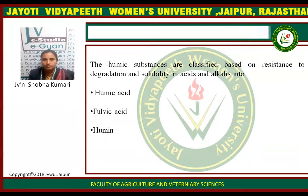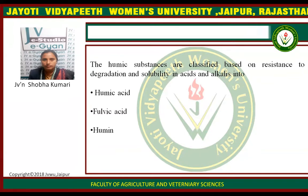Humus is classified based on resistance to degradation and solubility in acid and alkaline conditions into three types: humic acid, fulvic acid, and humin.